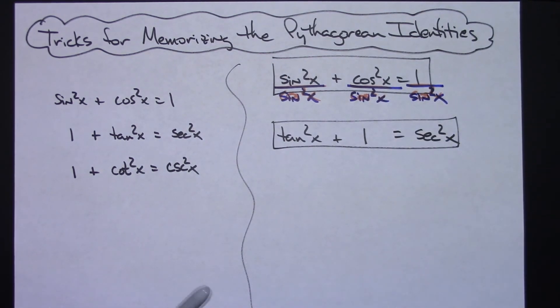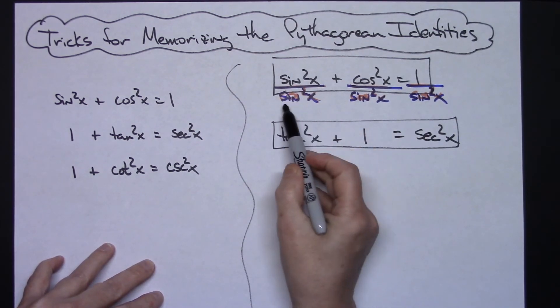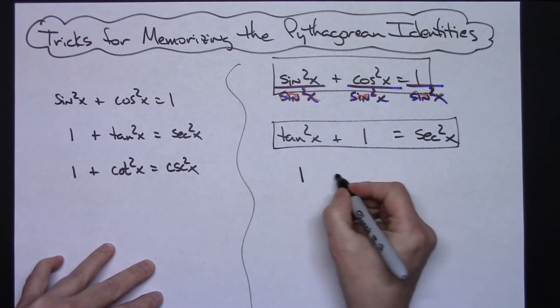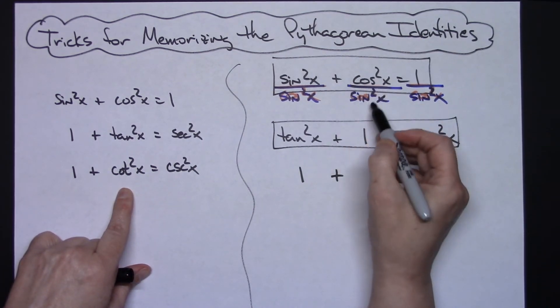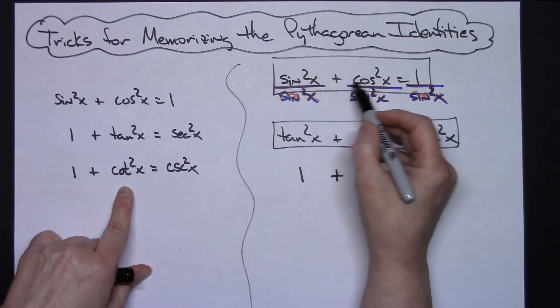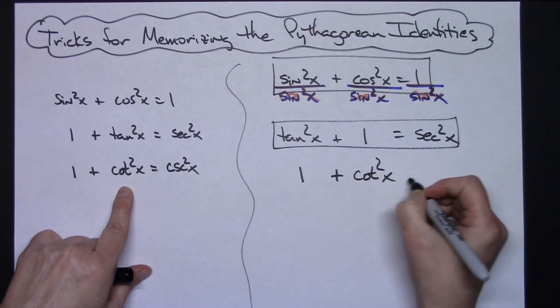Okay, so now we're going to go through and simplify this. Anything over itself is always 1. So sine squared x over sine squared x is going to give me a 1. All right, and then looking at this one, cosine over sine is cotangent. So since these are both squared, then this is our cotangent squared x.